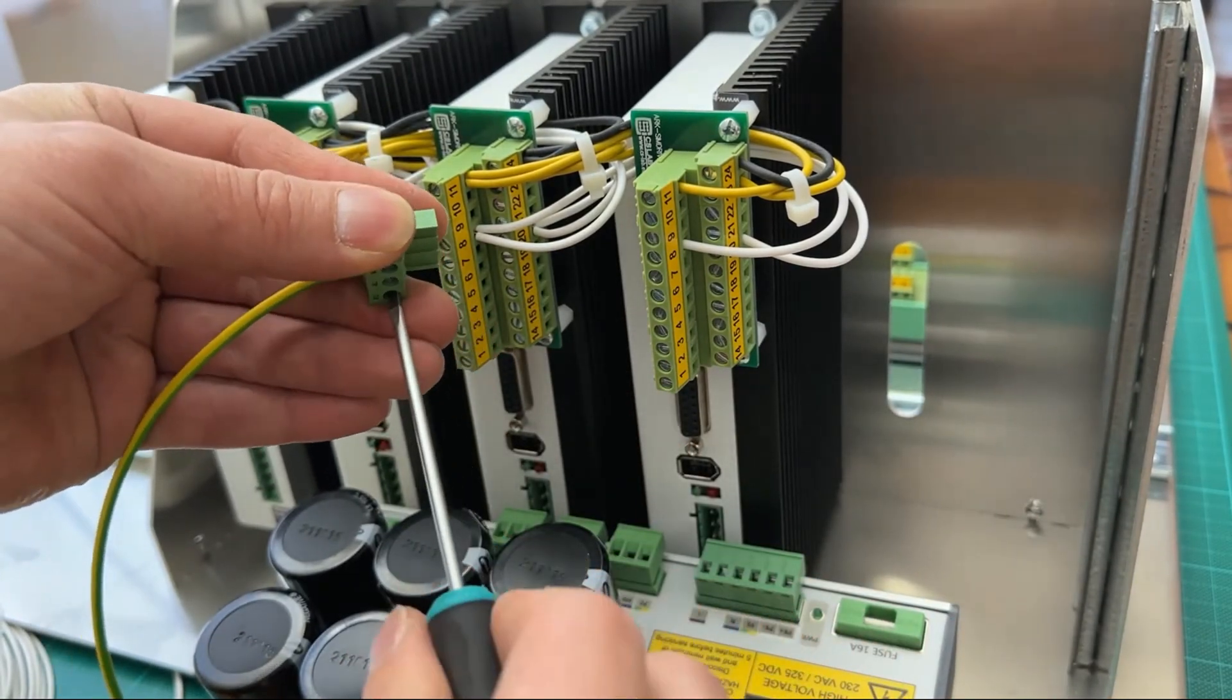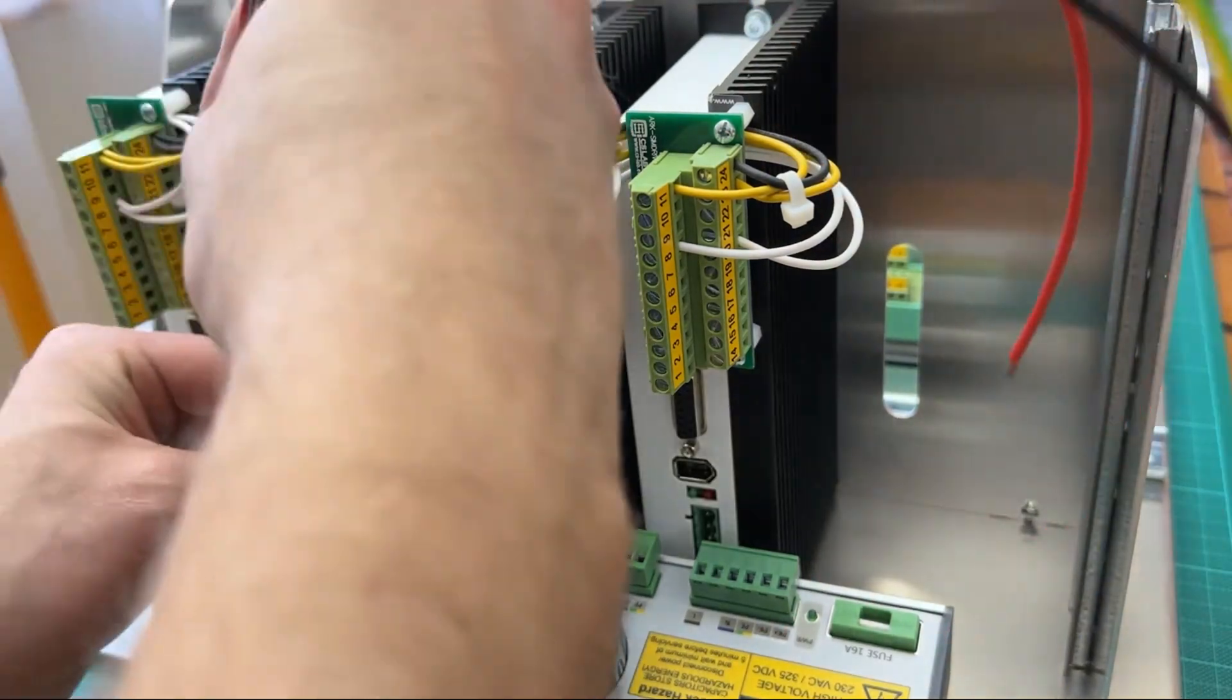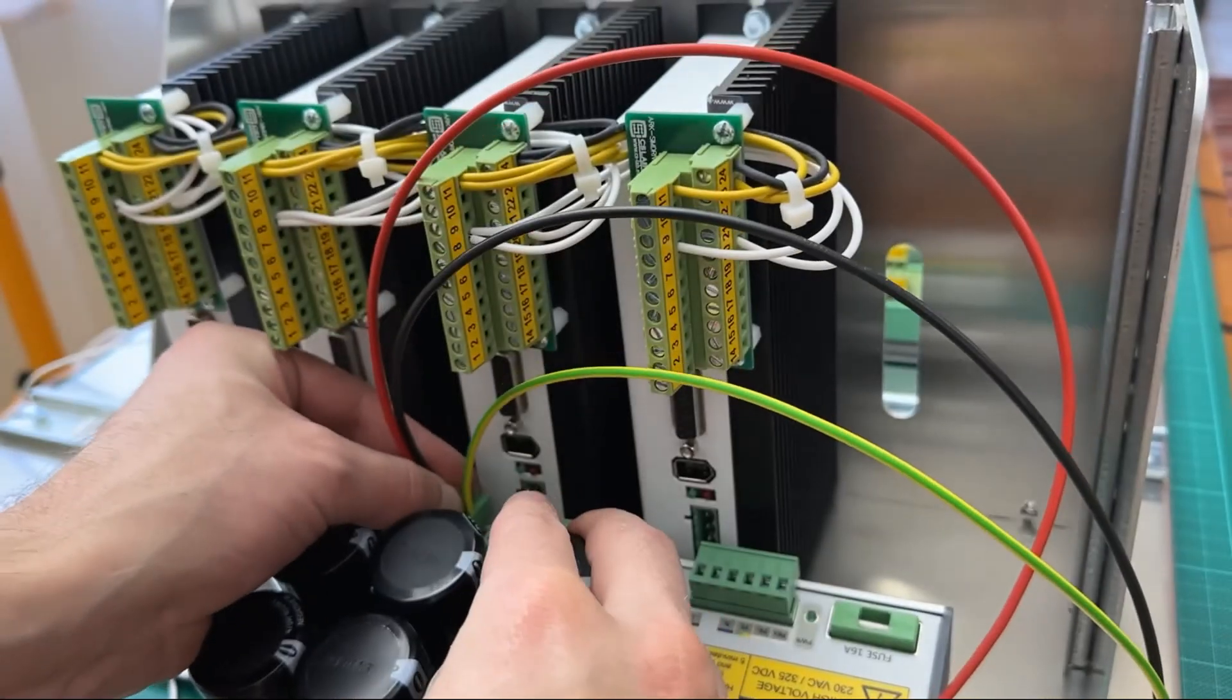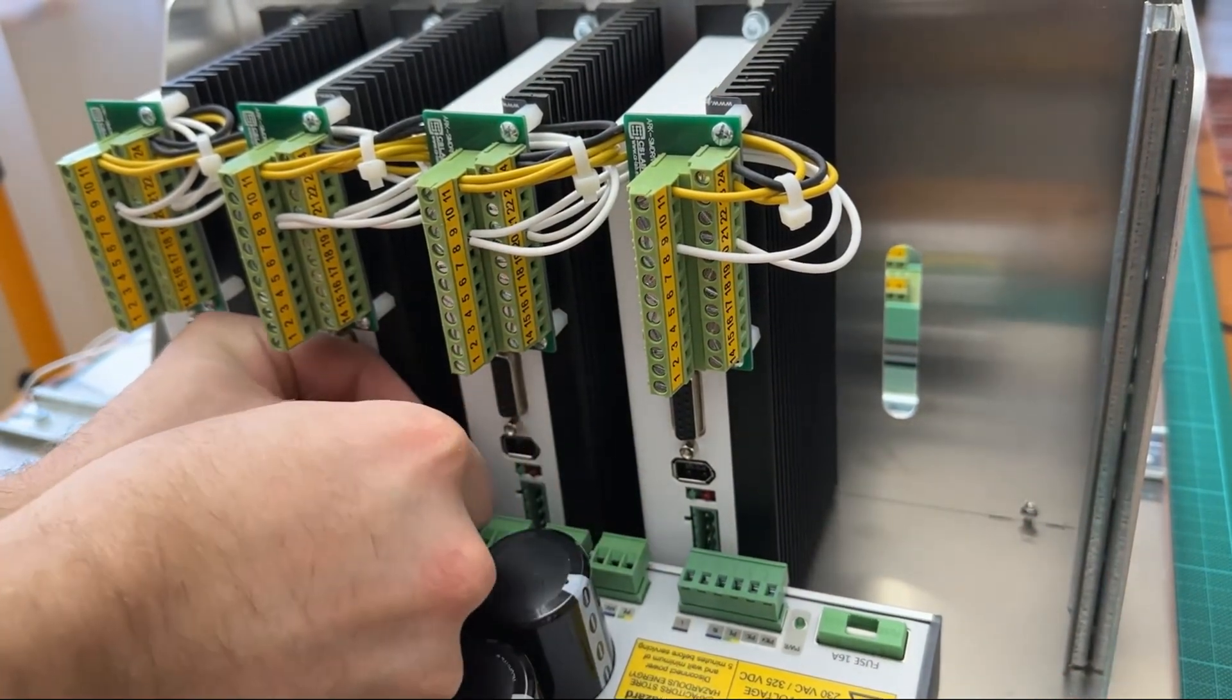It's time to spice things up with some high voltage stuff. Actually, it's as high as 325 volts. Each motor drive got three wires from power supply, and these are positive, negative, and earth.